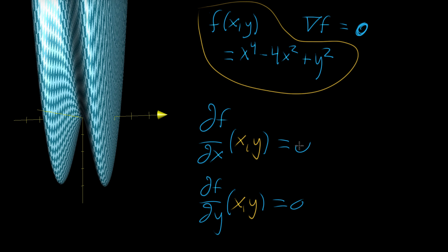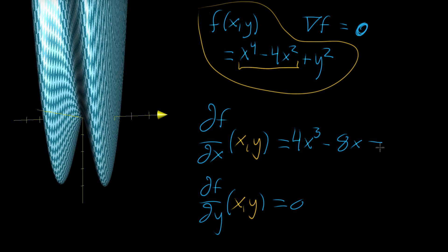Let's actually do that. The partial derivative with respect to x: the only places where x shows up are x⁴ − 4x², so that x⁴ turns into 4x³, and −4x² becomes −8x. The y² term looks like a constant, so nothing changes there. The first requirement is that 4x³ − 8x = 0. For the partial derivative with respect to y, the only place where y shows up is the y² term, so the partial derivative with respect to y is just 2y, and we set that equal to 0.